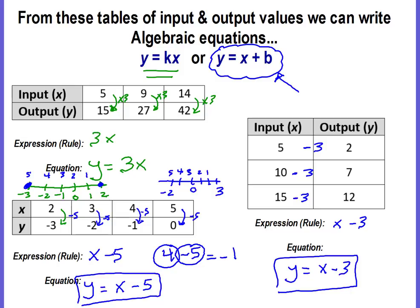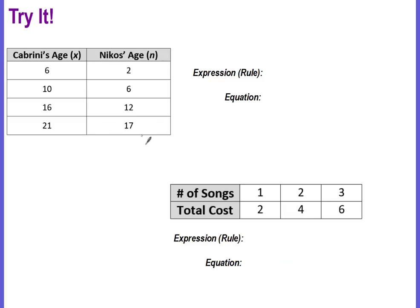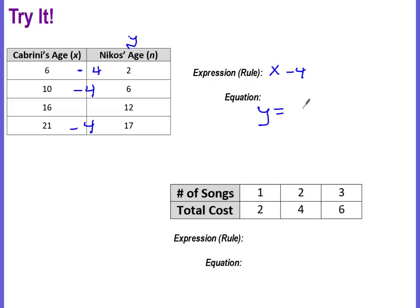Pause the video and work these two on your own, then come back and check. We have Cabrini's age (x) and Nikos' age (n, our y). We could divide 6 by 3 or subtract 4 — but dividing 10 by 3 doesn't give 6, while 10 minus 4 is 6, and 21 minus 4 is 17. So the rule is subtract 4. The equation is y equals x minus 4.